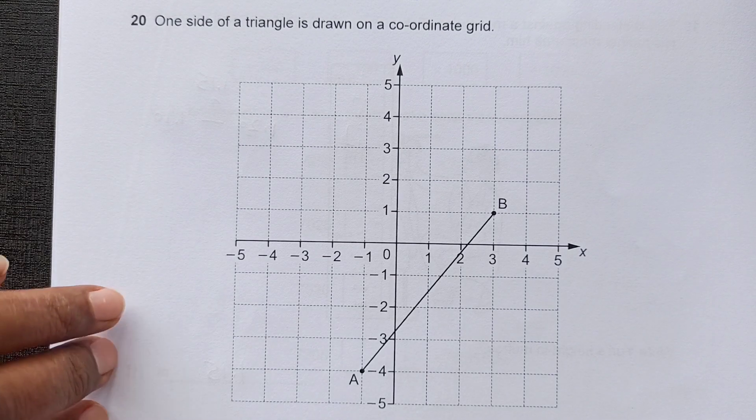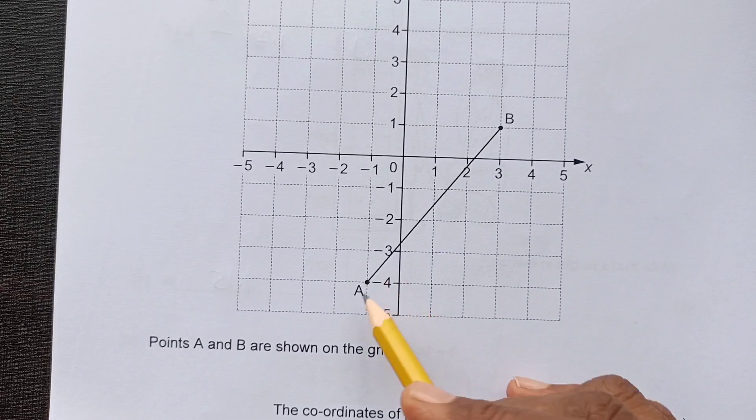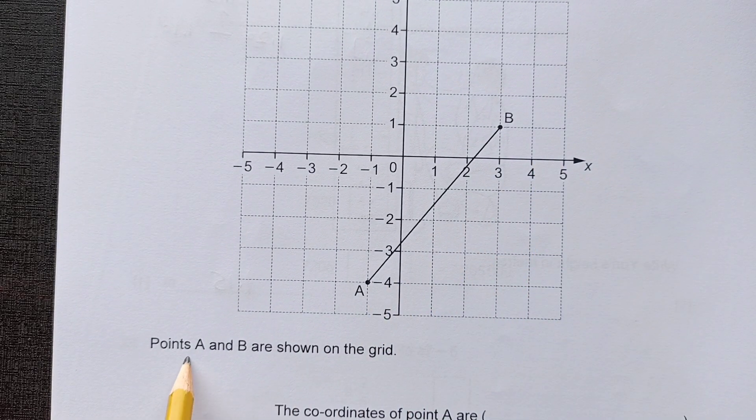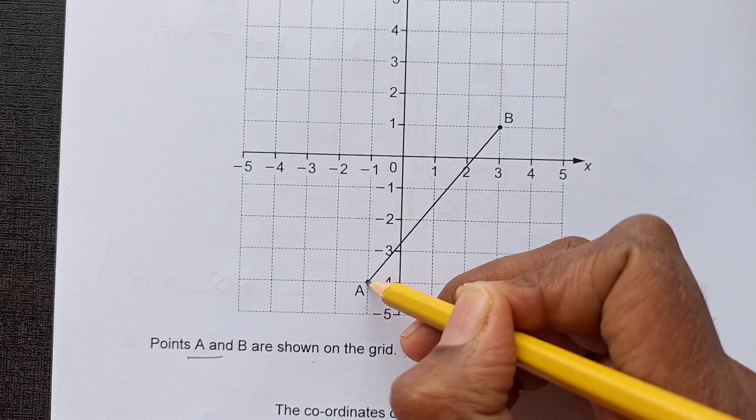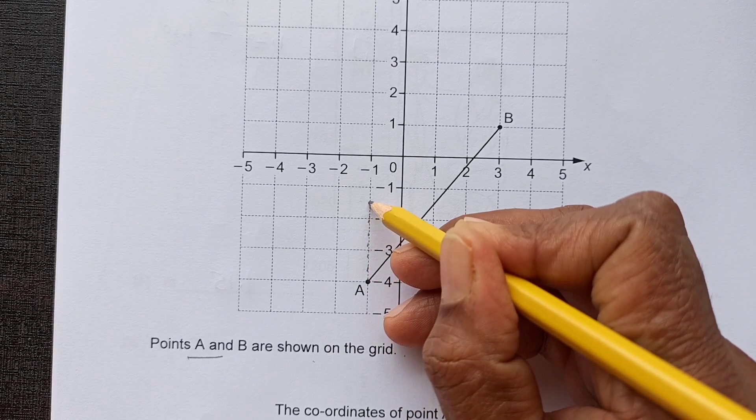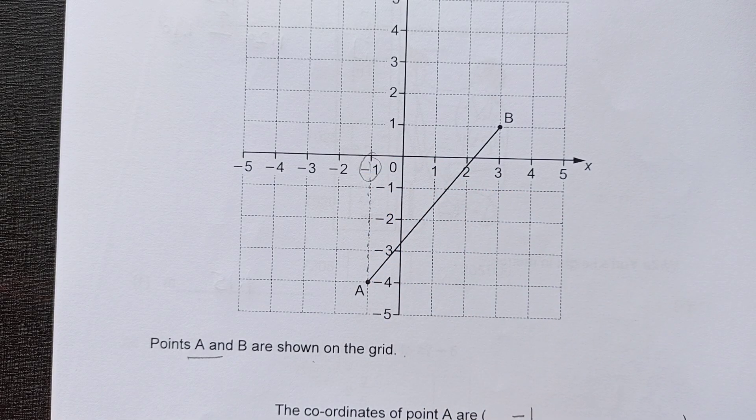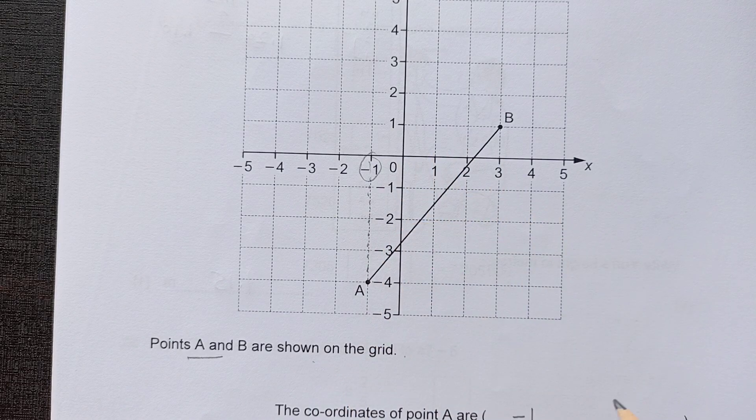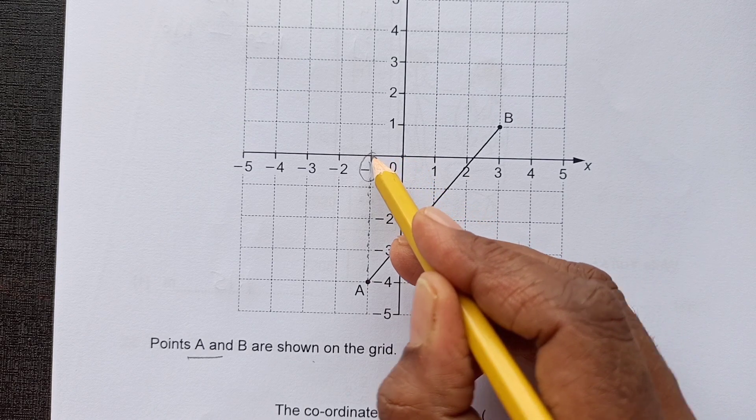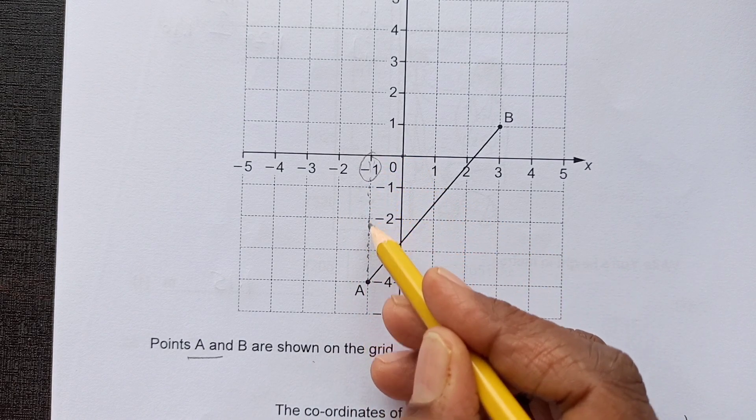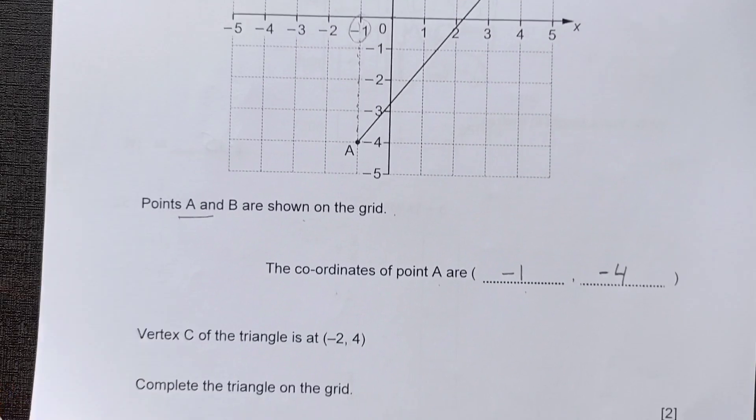Question 20. One side of the triangle is drawn on the coordinate grid. We have this one side here. Points A and B are shown on the grid. The coordinates of point A are, we are looking for coordinates of A. This is A. First, we need the x coordinate. So we will go along the x-axis. X is negative 1 and Y is... from here, X is negative 1 and this one here: 1, 2, 3, and 4. So it is negative 4. So these are the coordinates of A: negative 1, negative 4.